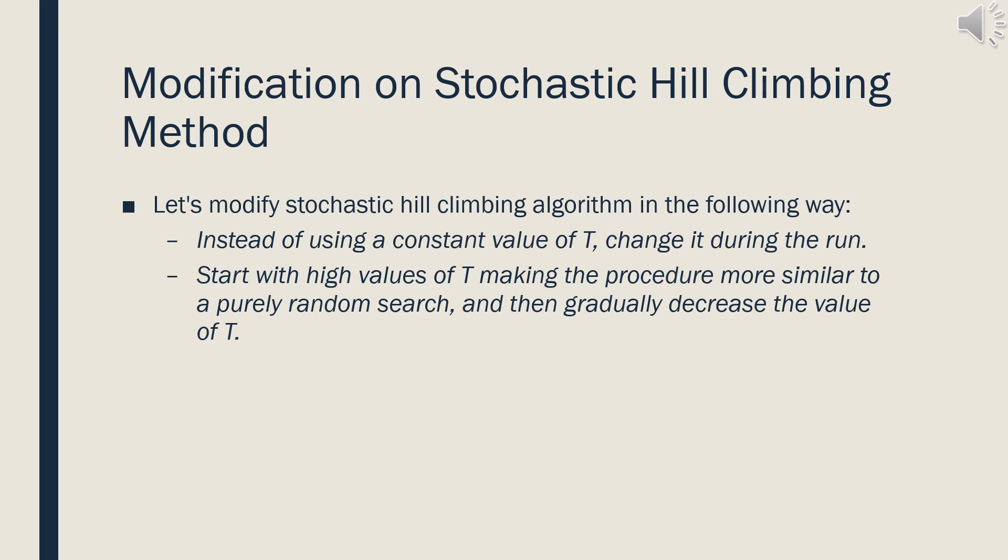Finally, let's modify the stochastic hill climbing algorithm. Stochastic hill climbing uses a constant T value throughout the search. Instead of using a constant T, we can use a floating value. T can be decreased during the run so that it starts with a random search, and the final stages resemble an ordinary hill climbing method. Such a modification leads us to another algorithm called simulated annealing.